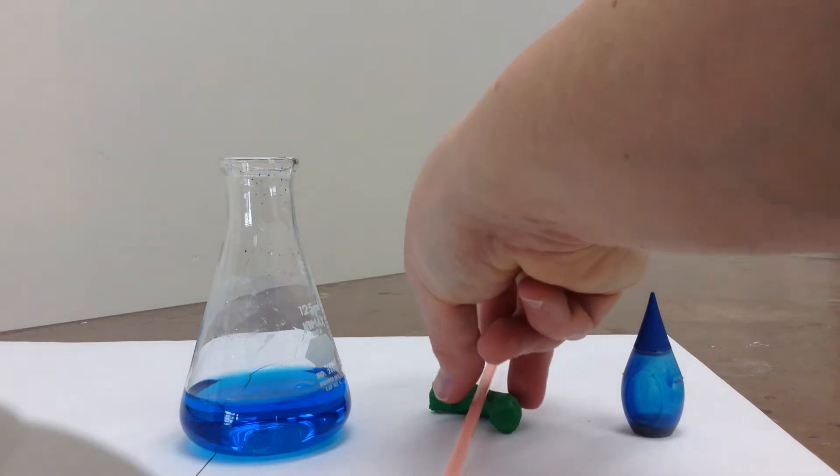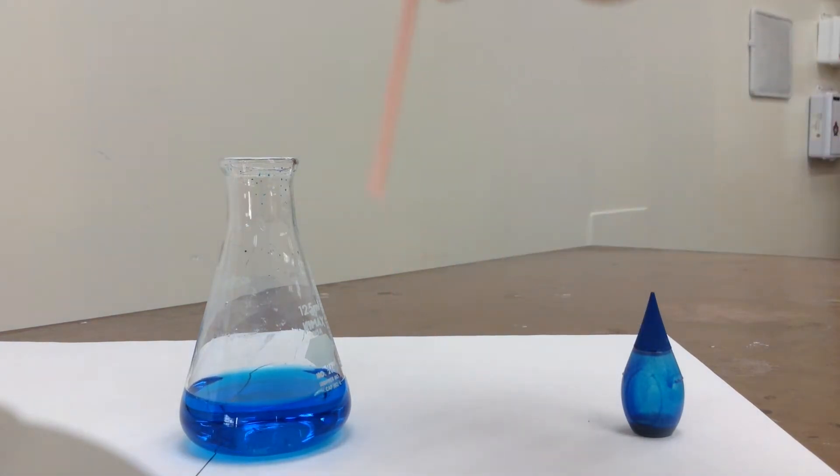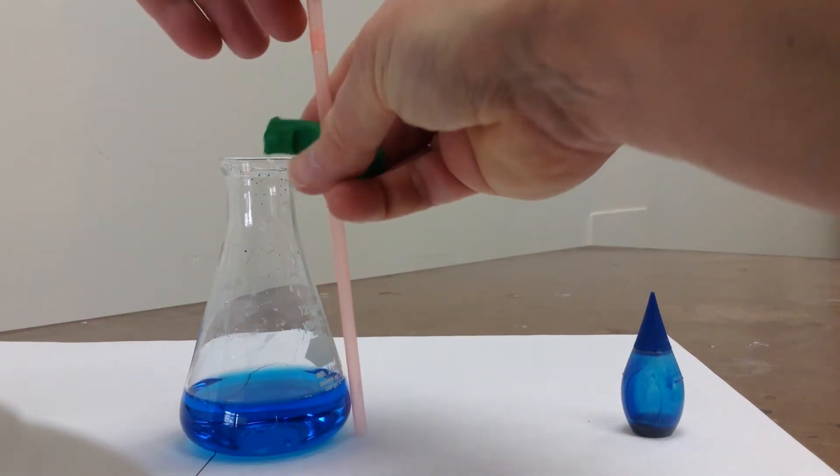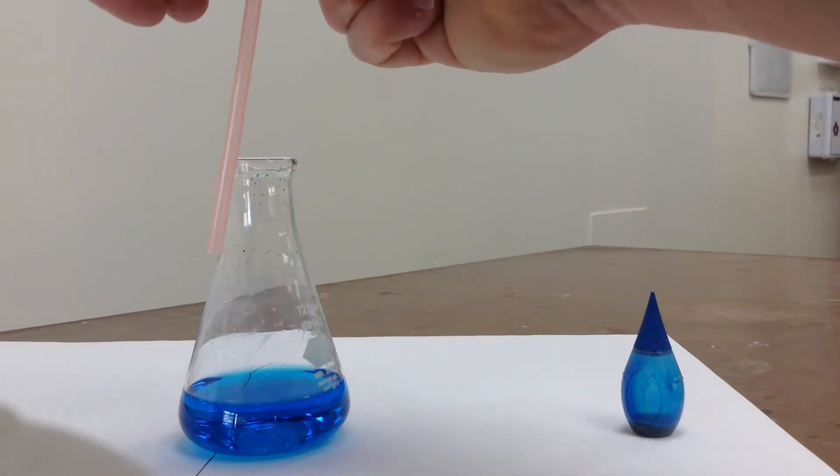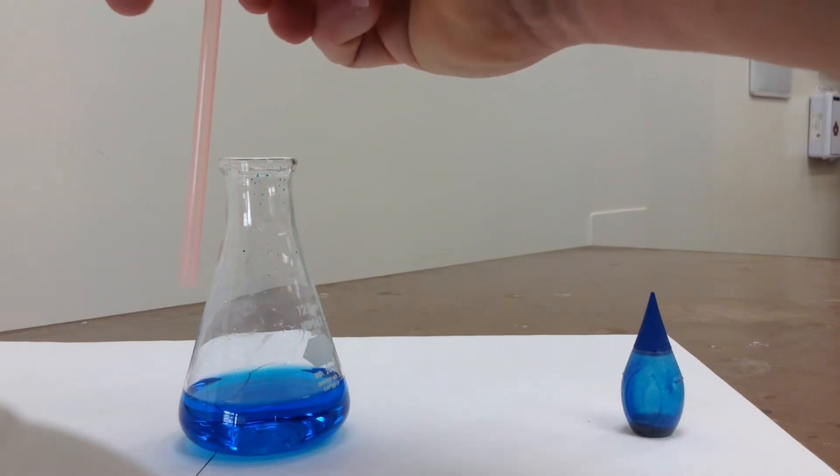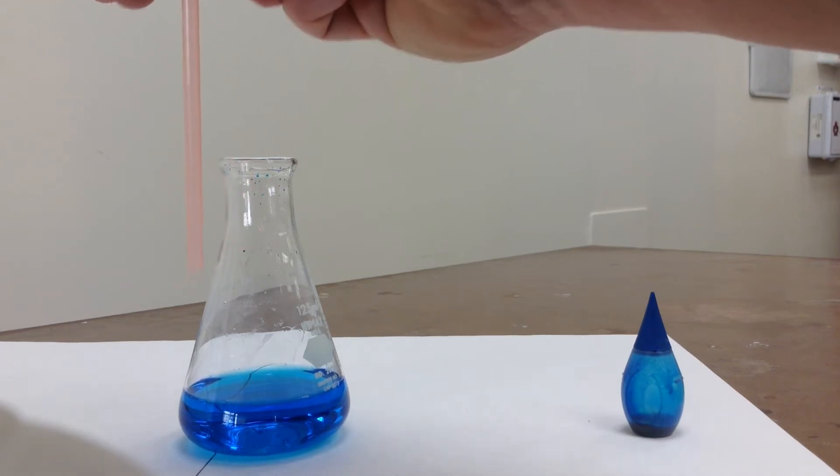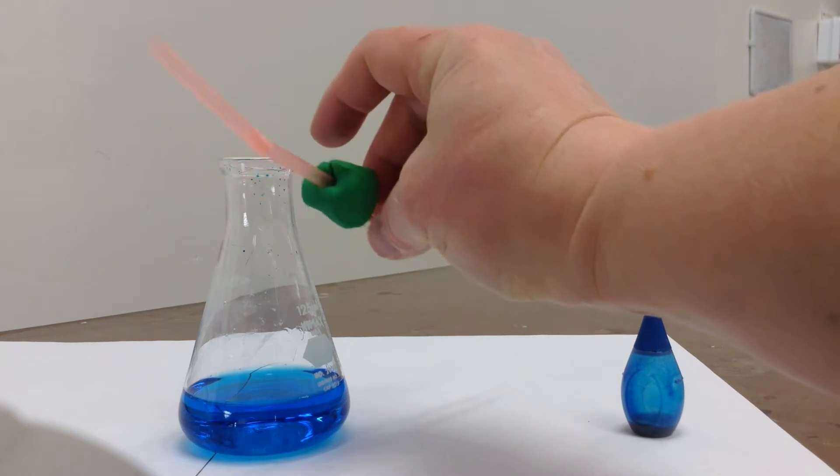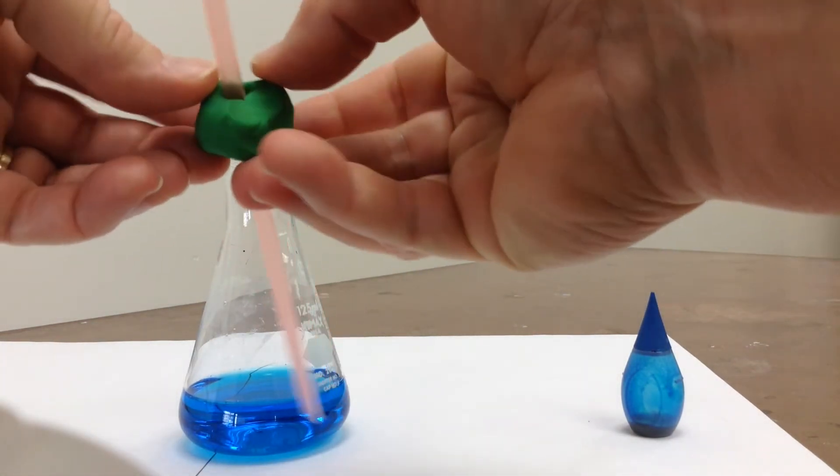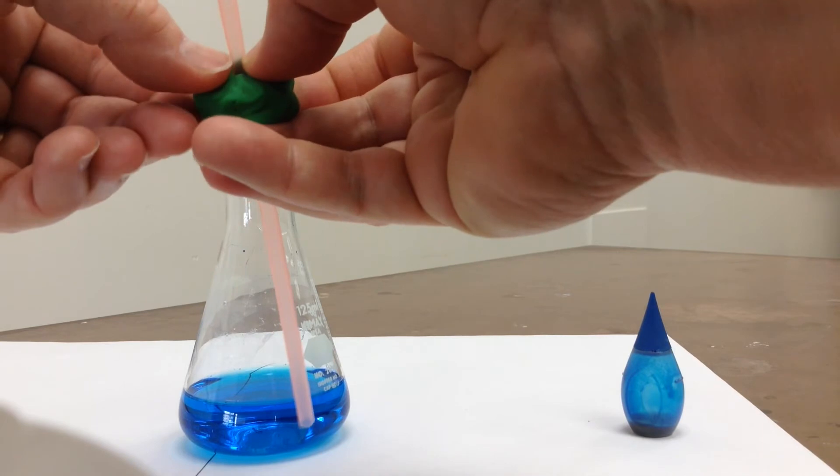Now the way this works is we're going to make a seal around the top with our modeling clay and have our straw down at the bottom. So first thing you want to do is kind of mold your clay around the straw. You need it airtight or your thermoscope isn't going to work.